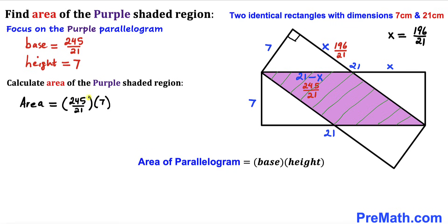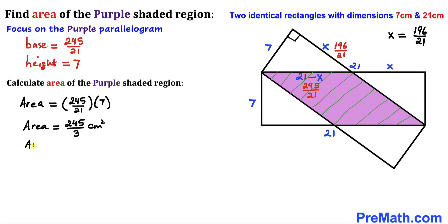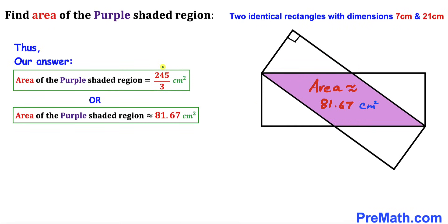Simplifying the right-hand side, the area of this purple shaded region turns out to be 245 divided by 3 centimeters squared. In decimal form, the area is approximately equal to 81.67 centimeters squared. That's our final answer. Thanks for watching and please don't forget to subscribe to my channel for more exciting videos.